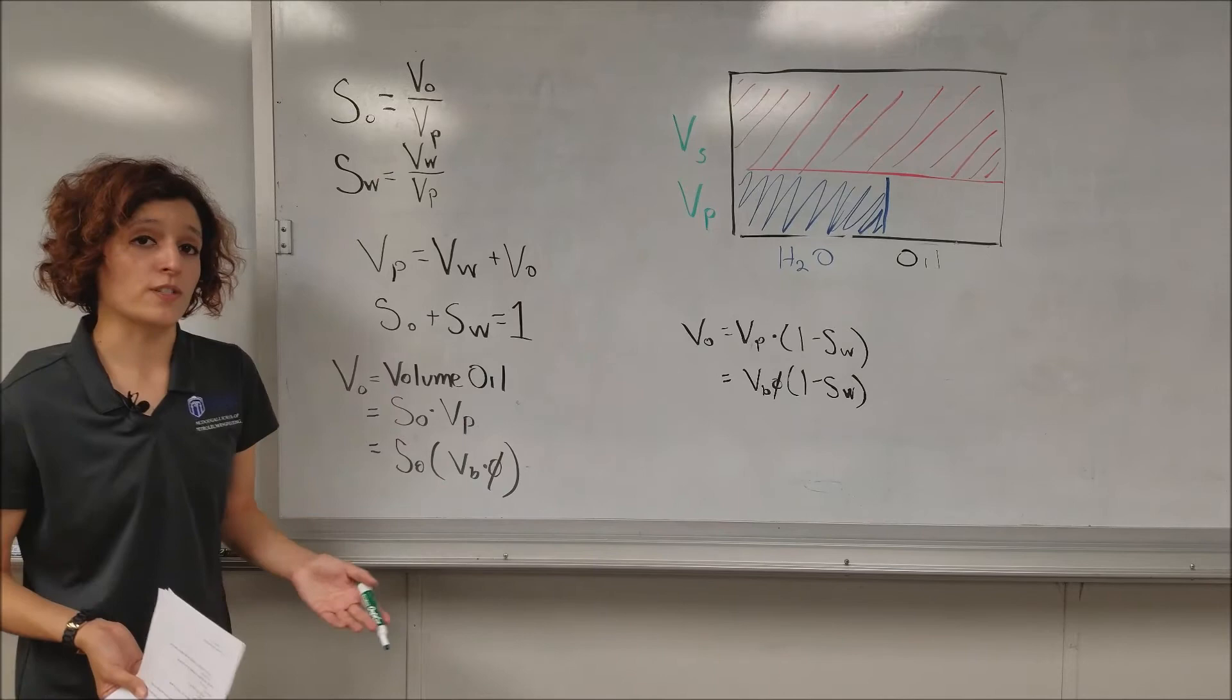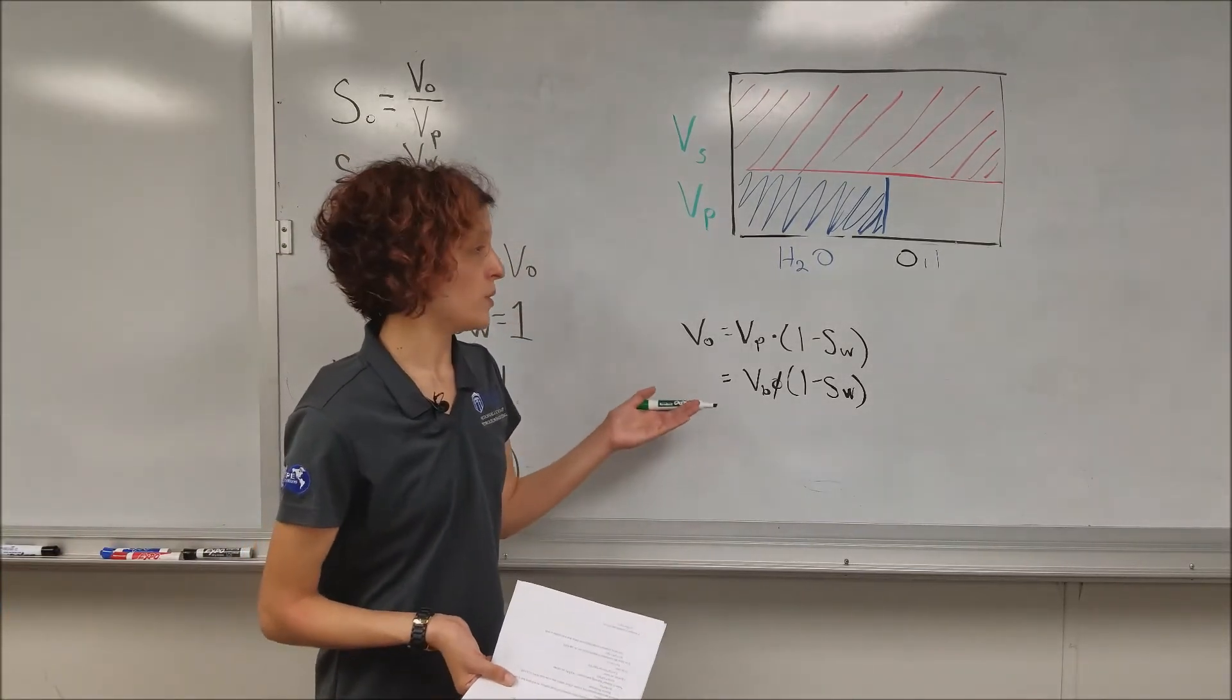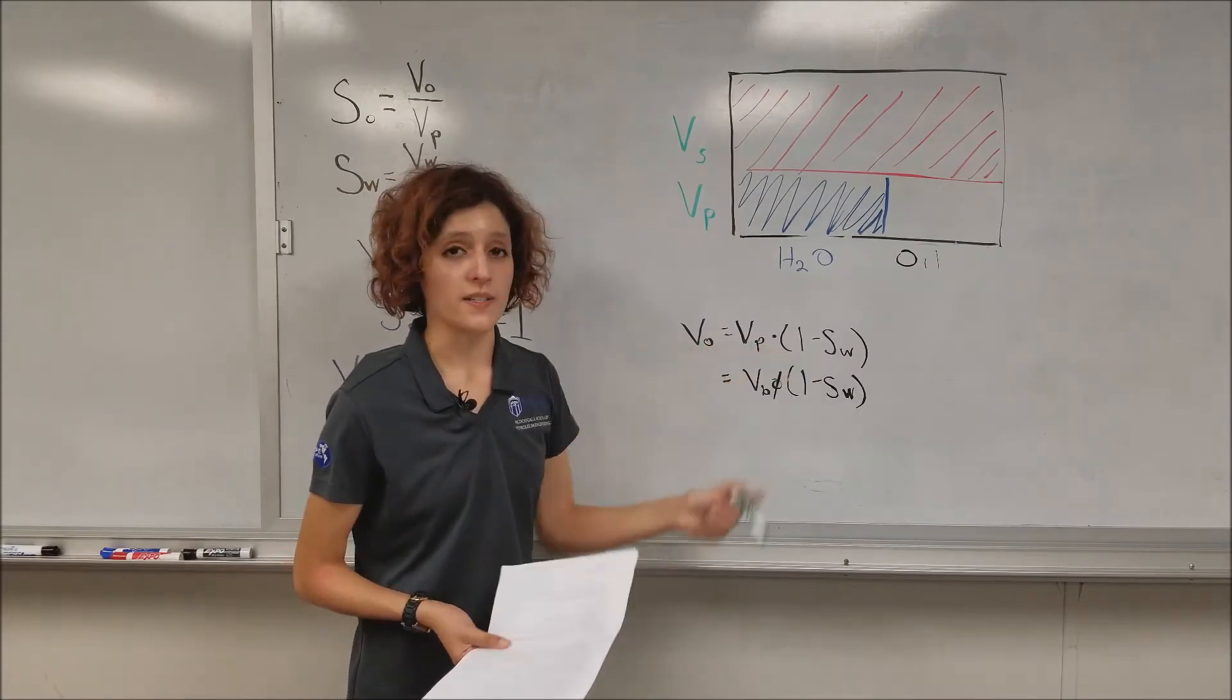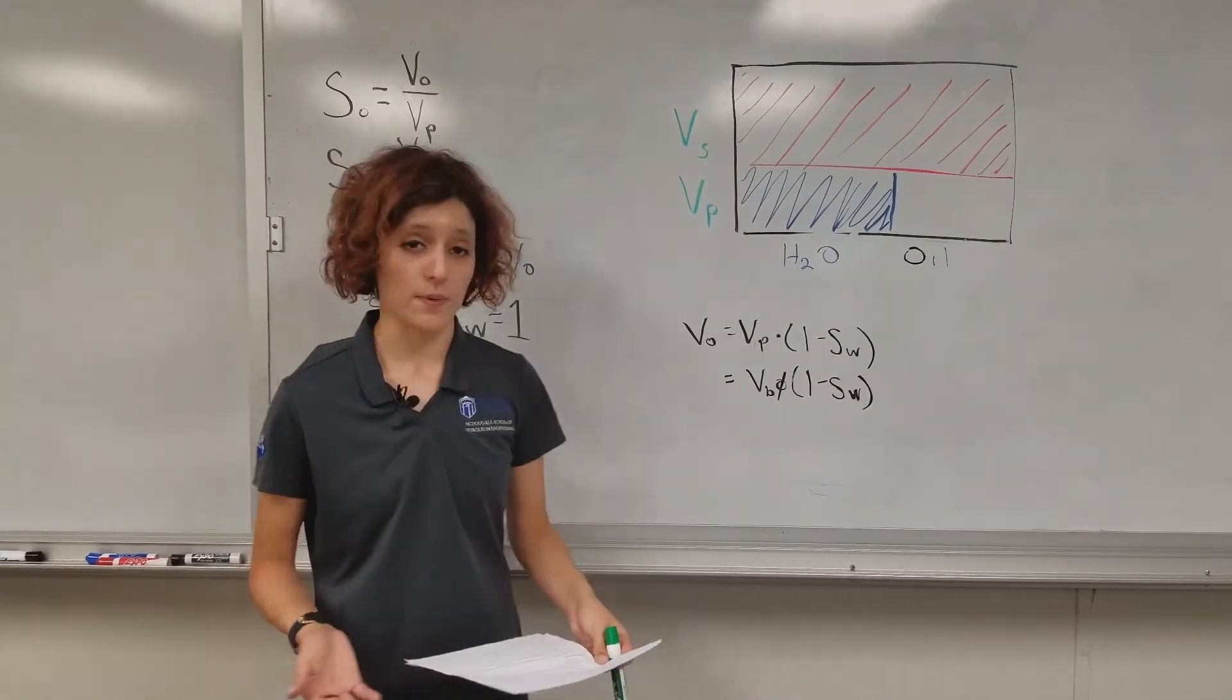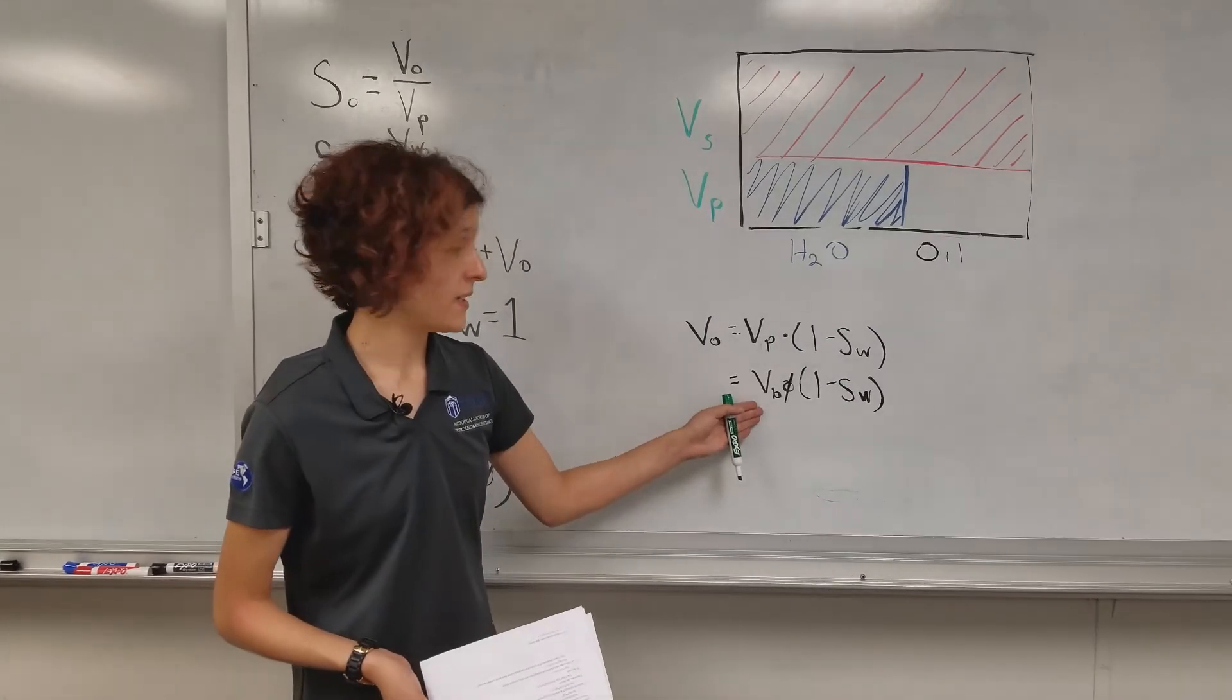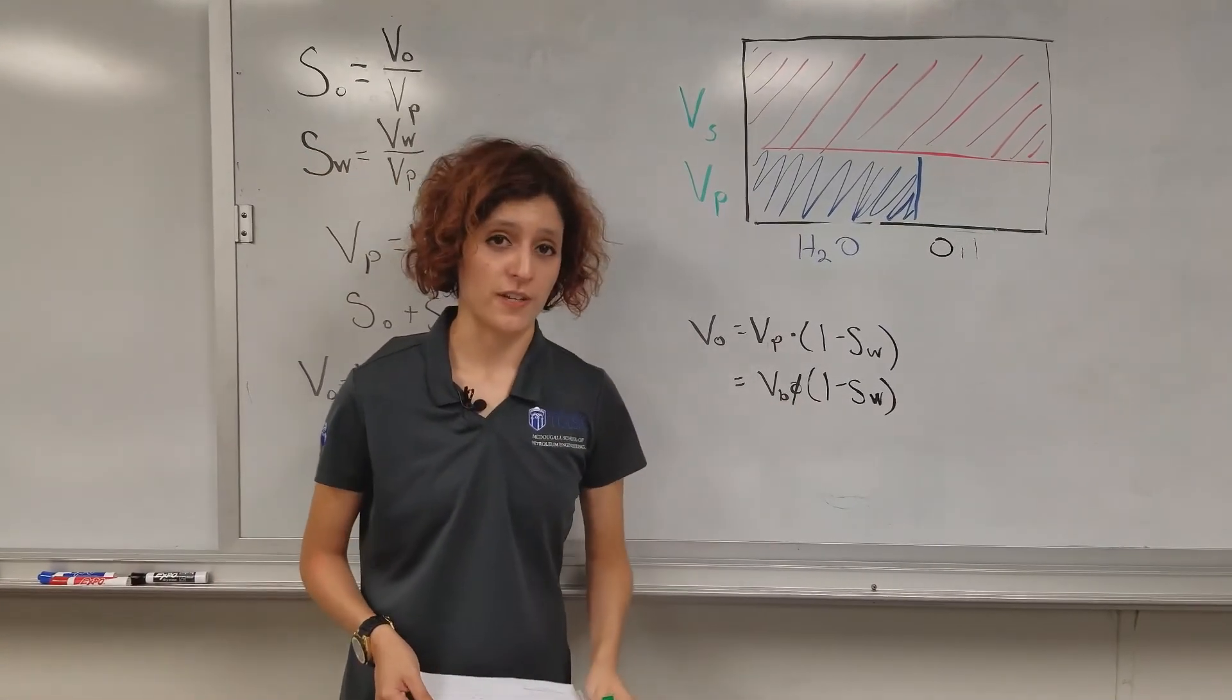We can also put it in terms of water saturation. So, our volume of oil would be V sub P times one minus the water saturation. Putting it again, in terms of bulk volume and porosity, it would therefore just be V sub B times porosity times one minus the water saturation.